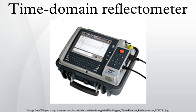A TDR transmits a short rise time pulse along the conductor. If the conductor is of a uniform impedance and is properly terminated, the entire transmitted pulse will be absorbed by the far end termination and no signal will be reflected toward the TDR. Any impedance discontinuities will cause some of the incident signal to be sent back towards the source. This is similar in principle to radar. Increases in the impedance create a reflection that reinforces the original pulse, whilst decreases in the impedance create a reflection that opposes the original pulse.